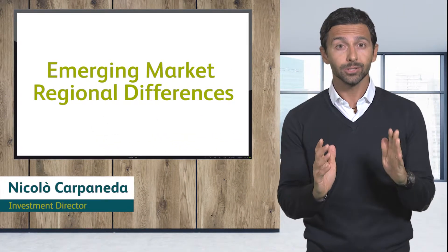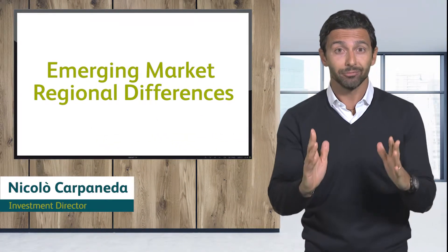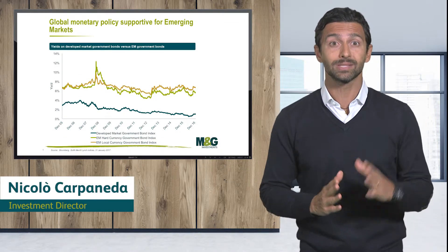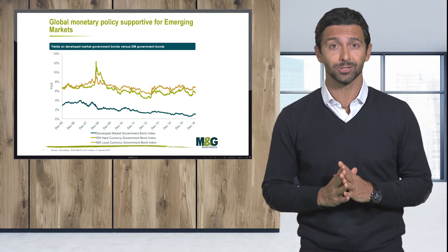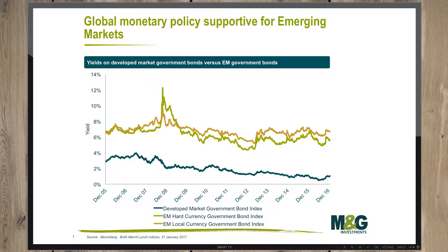Emerging market regions are different, and this video will be about some of the peculiarities and definitions when we analyze emerging market debt. We tend to think of it as a homogeneous asset class behaving similarly. As we can see on slide one, this is the typical analysis — yields from government and corporate bonds of emerging markets compared with the yields of developed economies. It looks like it is all the same.